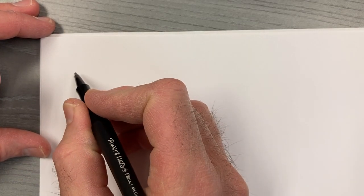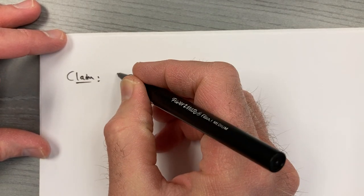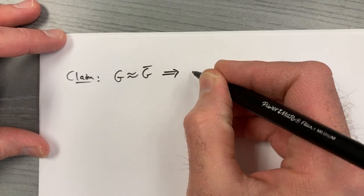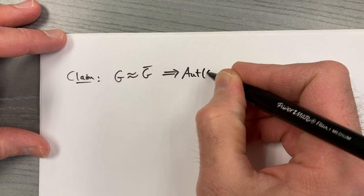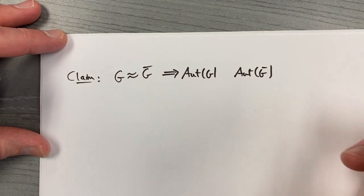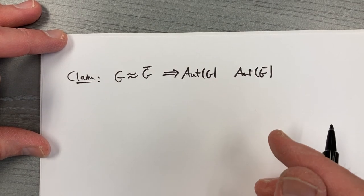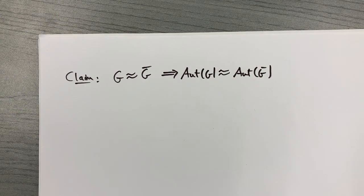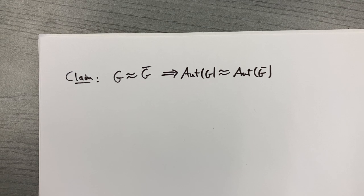Last time we talked about how Aut(G) was a group. This time, let's talk about how Aut(G) is sometimes called an invariant of group isomorphisms. Here's a claim: if G is isomorphic to G-bar, that implies that the group Aut(G) and the group Aut of G-bar are isomorphic as well. Aut(G) preserves isomorphic groups, you might say.